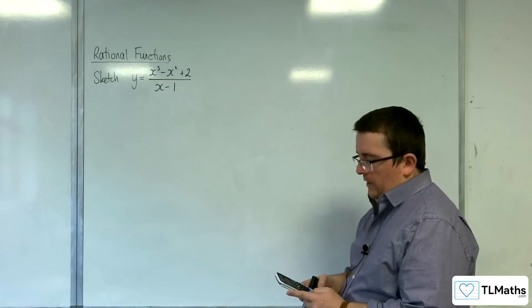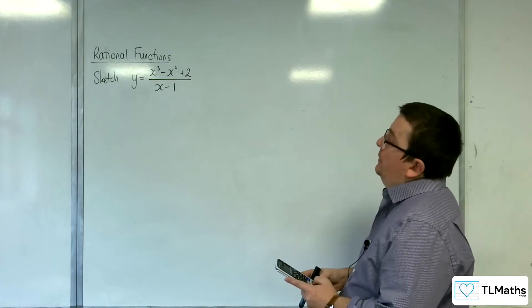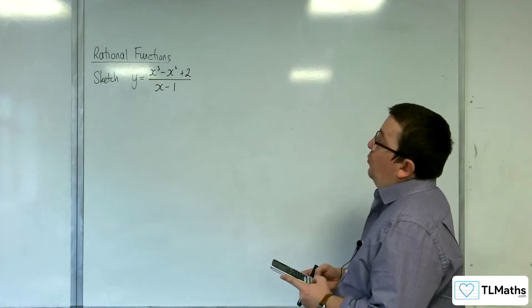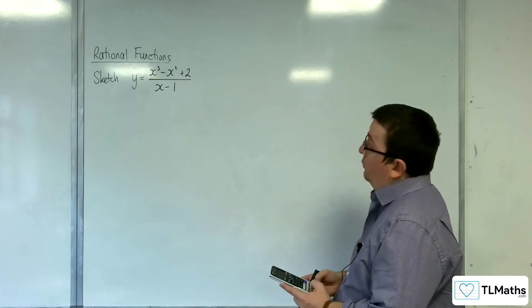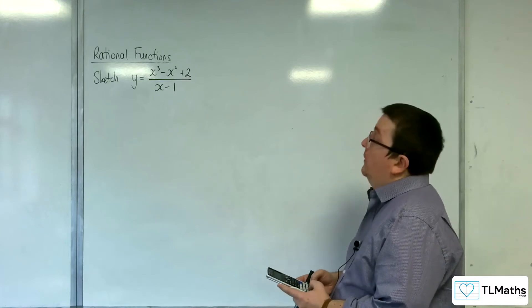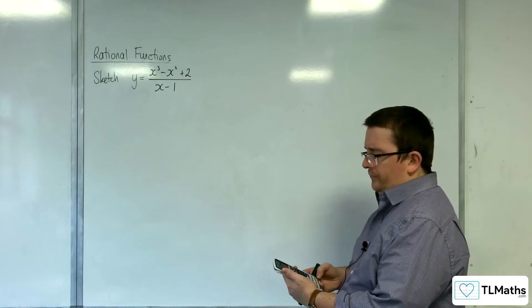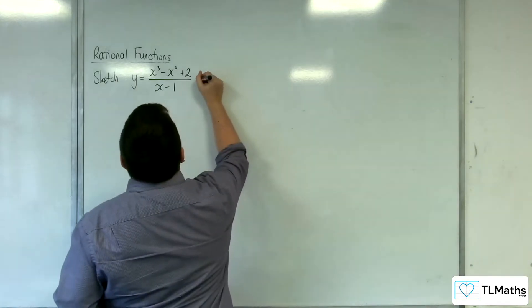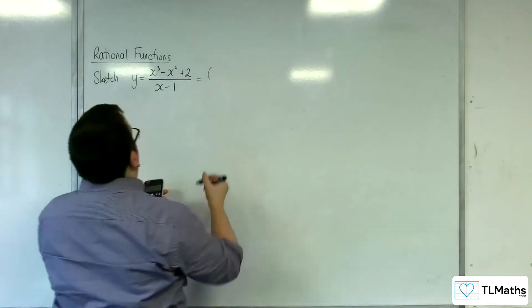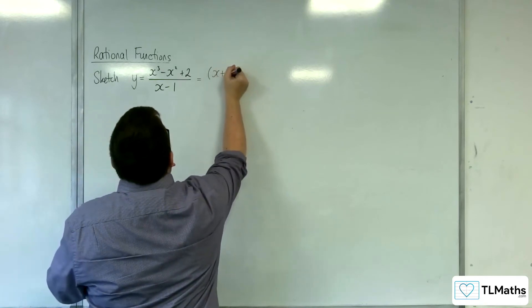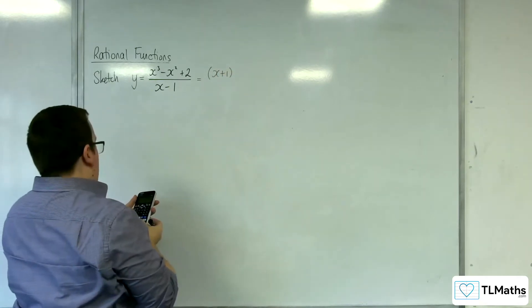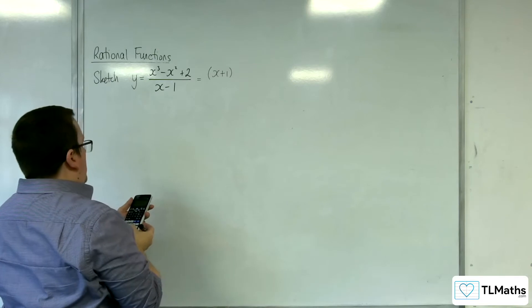So the first thing is can I factorise that numerator? So I'm going to put it into my calculator's polynomial solver, degree 3, and we've got 1x cubed take away 1x squared plus 0x plus 2. And so we get, well I'm getting a minus 1, so that must mean we've got x plus 1.